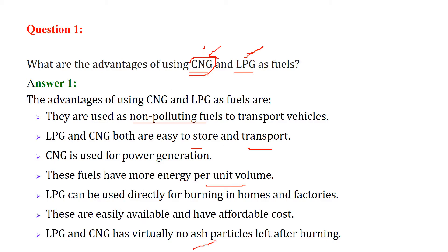LPG can be used directly for burning in homes and factories for heating purposes. They are easily available and the cost is quite affordable. LPG and CNG virtually don't create any ash after burning, which is very important.